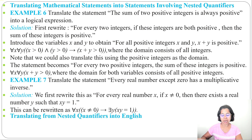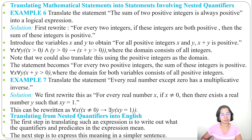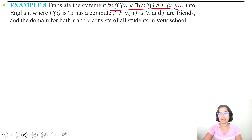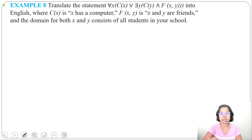Next, from nested quantifiers, we'll look at how to translate logical expressions into English. First we translate according to the predicate and quantifier, then simplify. Example 8: translate the statement 'for all x, C(x) or there exists y, C(y) and F(x,y)' into English, where C(x) means x has a computer, F(x,y) means x and y are friends, and the domain for both x and y consists of all students in your school.